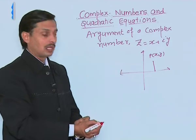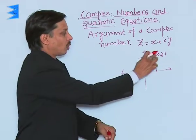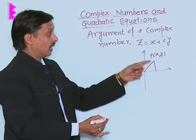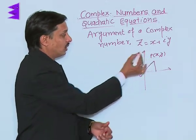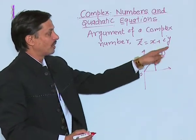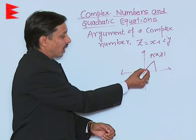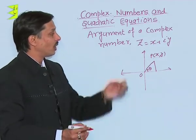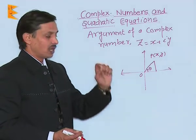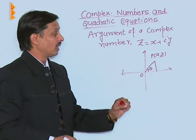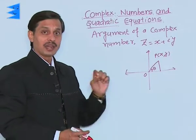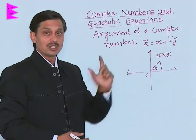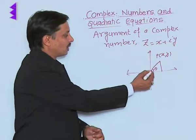When this point P, whose location is given by the coordinates x and y, is joined to the origin, the line segment joining the origin to point P forms a hypotenuse. The angle this hypotenuse makes with the positive direction of the x-axis is known as the argument. In other words, the argument is the angle made by the hypotenuse of that right-angled triangle with the positive direction of the x-axis. This angle is theta.